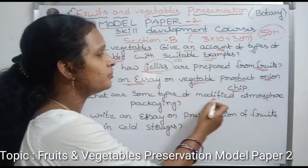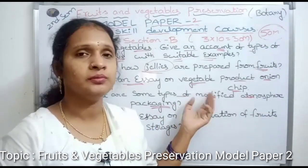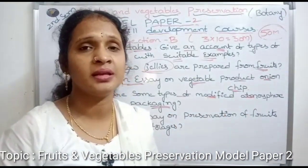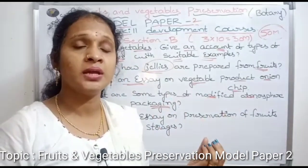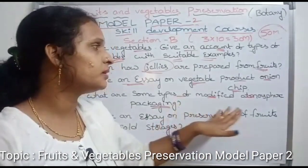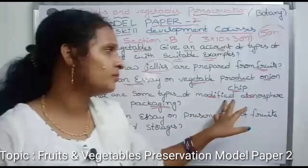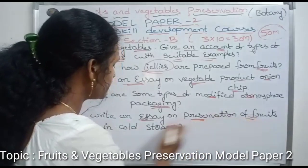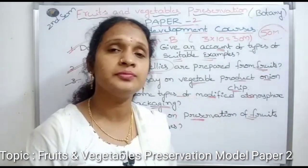Fourth question: what are the types of modified atmosphere packaging? We are packaging food materials considering moisture, heat, frozen conditions, or room temperature — there are different methods in packaging. Fifth question: write an essay on preservation of fruits in cold storage — in cold storage, the methods used to preserve fruits are discussed.